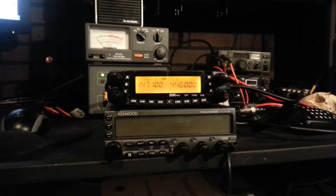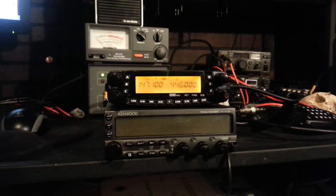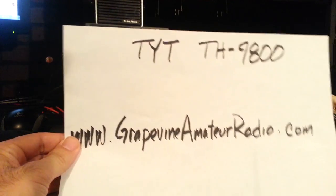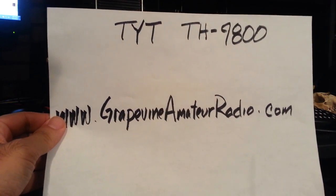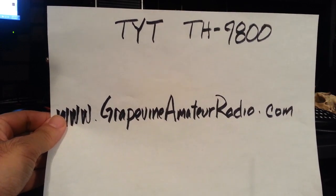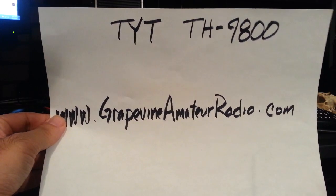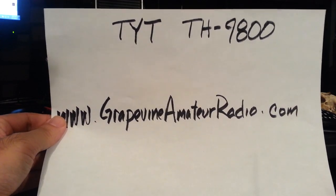Hey everybody, this is Jason over at Grapevine Ham Radio. Today we're going to talk about how to program a TYT TH9800 quad band amateur radio. I get a lot of questions about how to program the radio and save frequencies in the radio memory for repeater operation. I sell a lot of these radios over at my website, grapevineamateurradio.com. Since January of 2014 I've probably sold 70-75 of these radios and they've all been pretty solid.